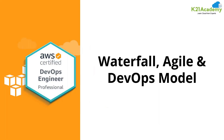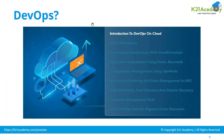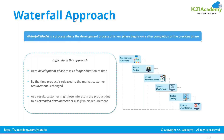Let's understand how DevOps came into picture. Whenever you want to create a software, there is a software development lifecycle that occurs in your organization. In the beginning, there was the waterfall approach, where a new phase begins only after the completion of the previous phase. Everything happens sequentially — requirement gathering, system designing, system implementation, system deployment, system testing, and system maintenance.